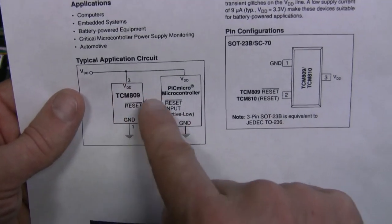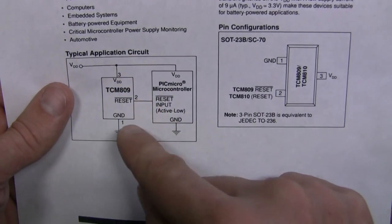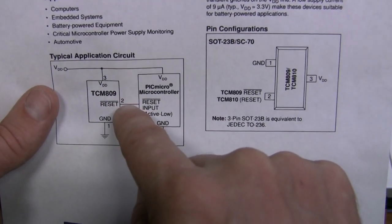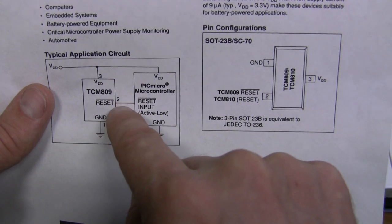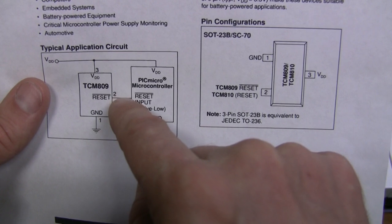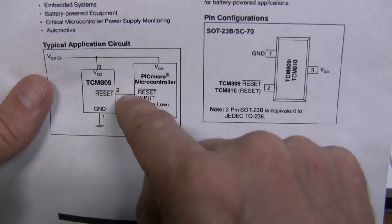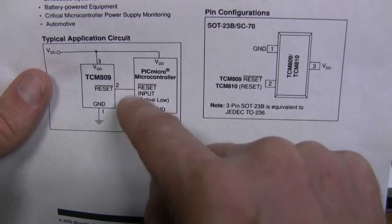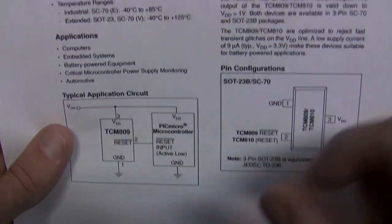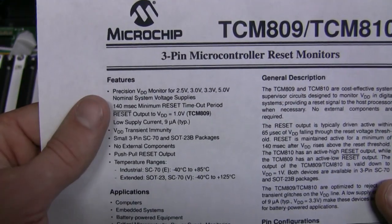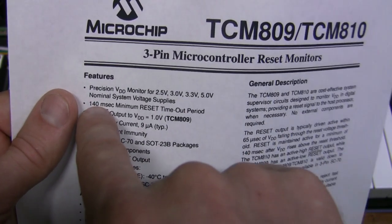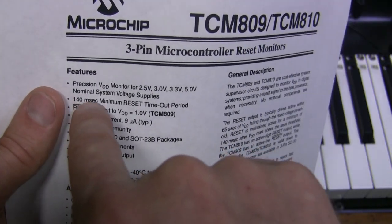So this chip has three pins: one is ground, one is power, and third one is reset. We should expect that this thing holds after powering up, holds the reset line low for a while and then goes high and stays high during normal operation. And what is this a while thing? Here in the specs they mention 140 milliseconds minimum.